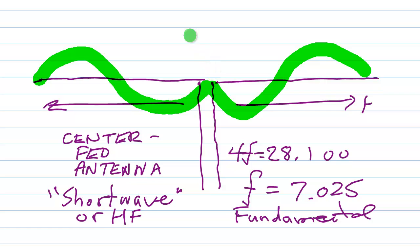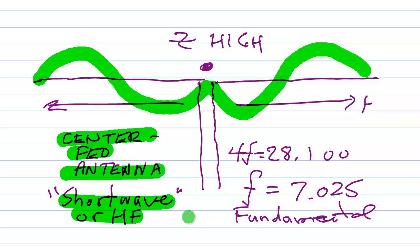Again, we will see a current node right here, so the feed point impedance here will be very, very high. But it'll be a pure resistance. At a current loop, the feed point resistance is relatively low. But again, it's a pure resistance. So those are just some very specific examples of what happens when you feed a dipole antenna, or a center-fed wire antenna like this, at the short wave or HF part of the spectrum, at a harmonic of its fundamental frequency.